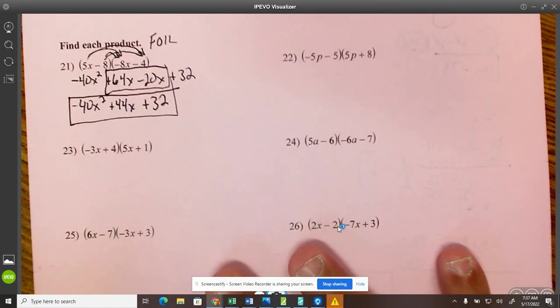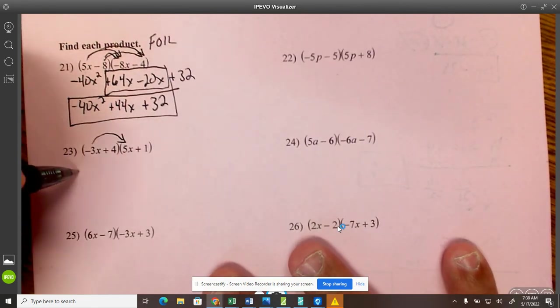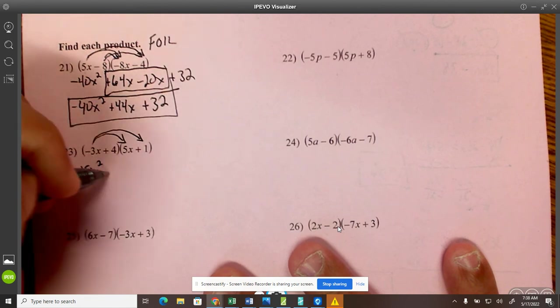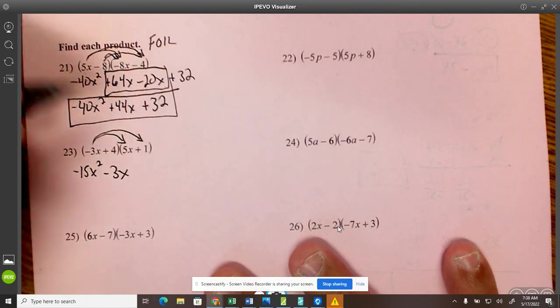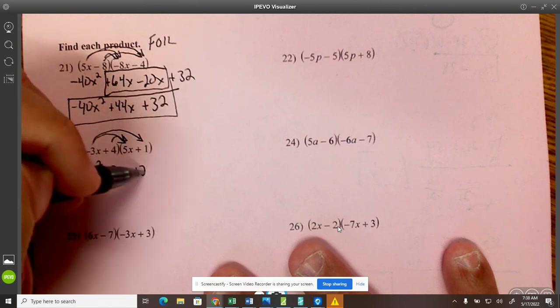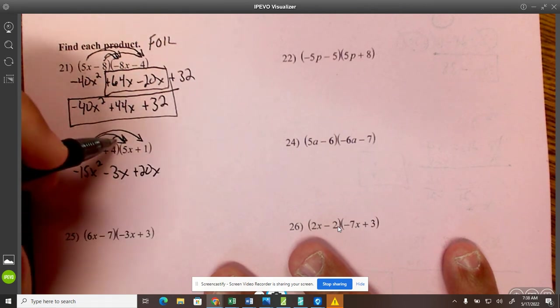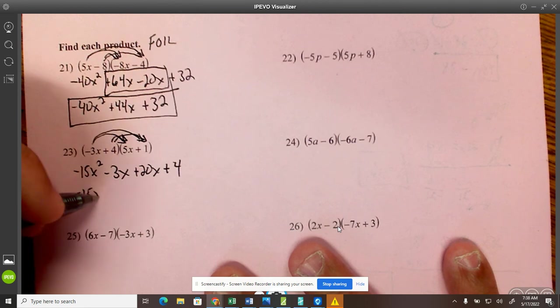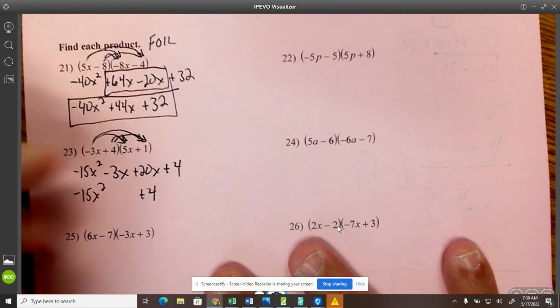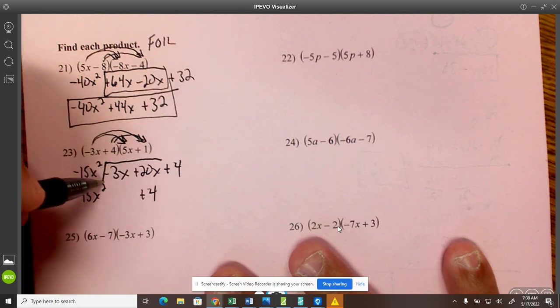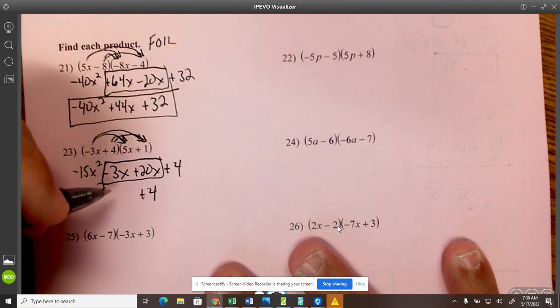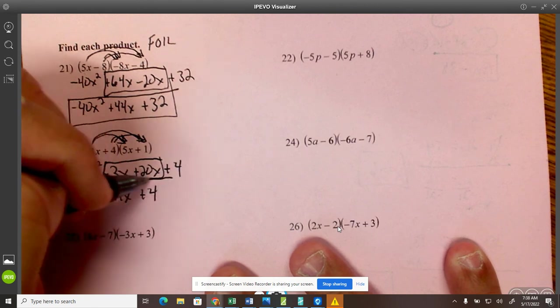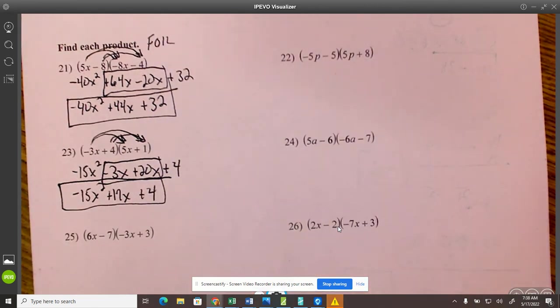Let's do this next one. Negative 3x times 5x, negative 15x squared. Negative 3x times 1, it's just negative 3x. 4 times 5x is 20x. And then 4 times 1 is 4. Again, these things stay the same because there's nothing to add them to. With this in the middle, you're going to have to combine. Negative 3x plus 20x is just 17x. So negative 15x squared plus 17x plus 4.